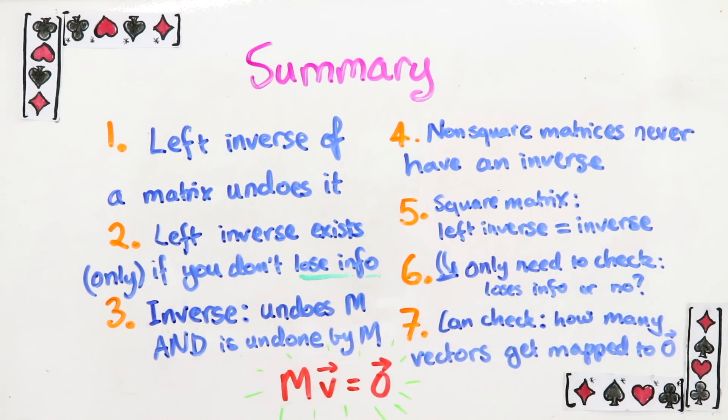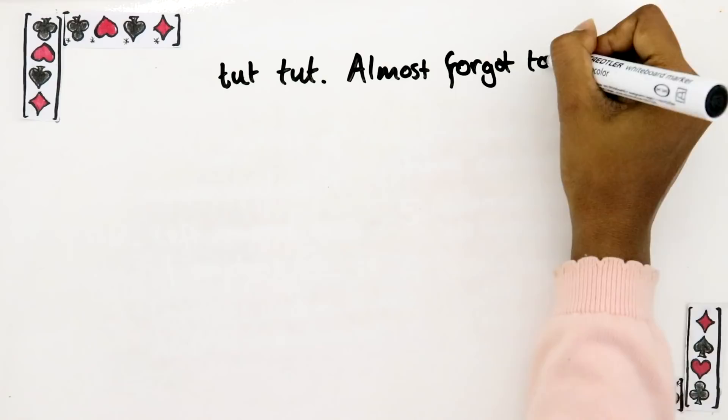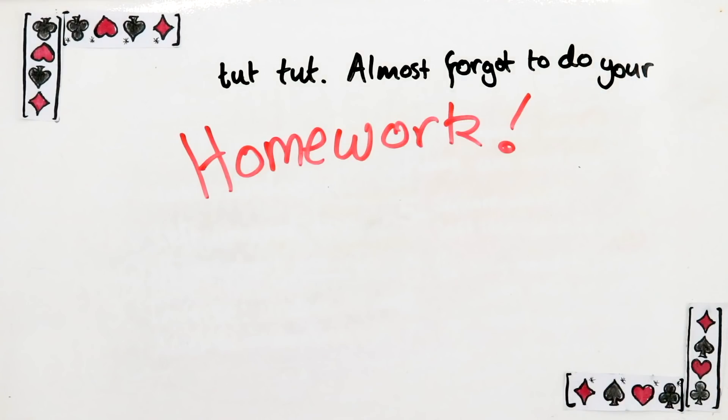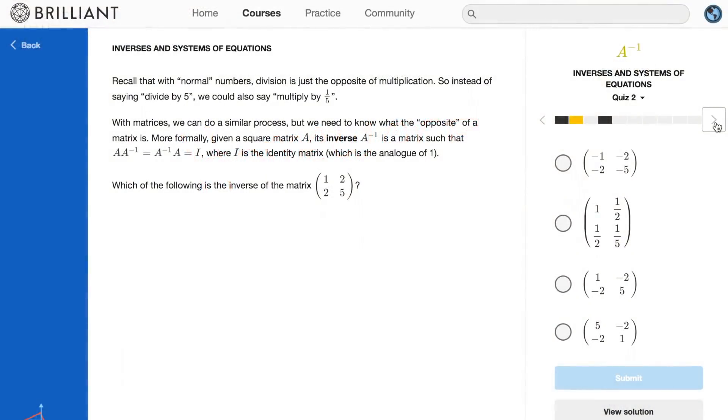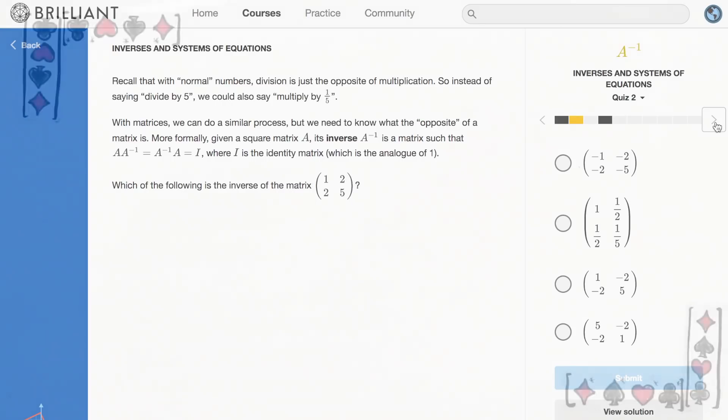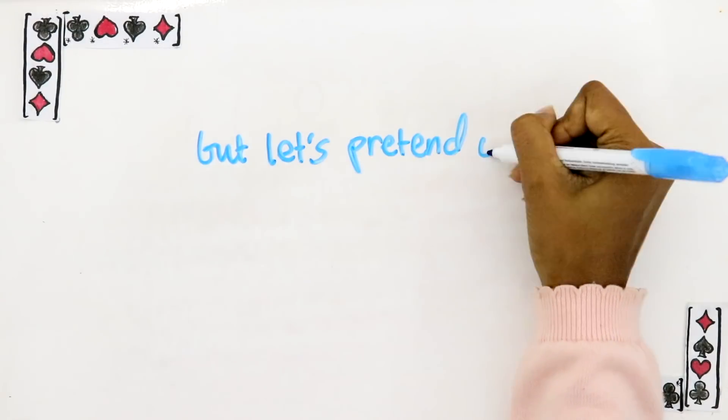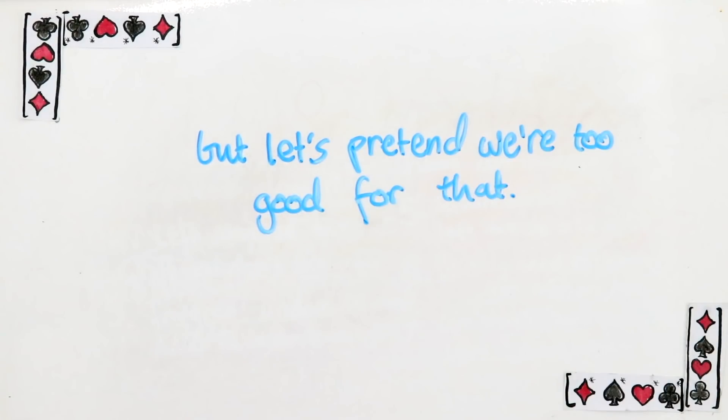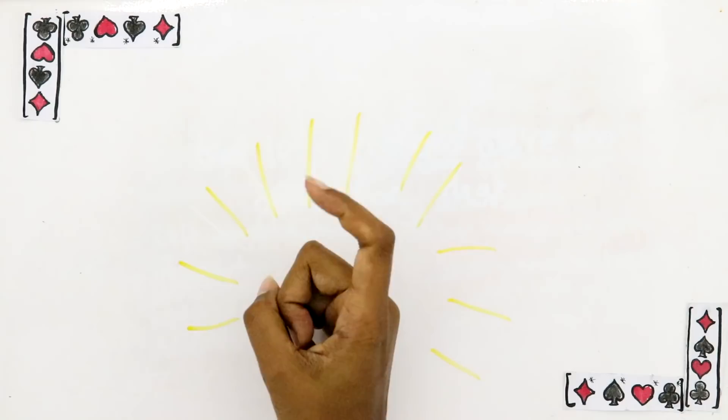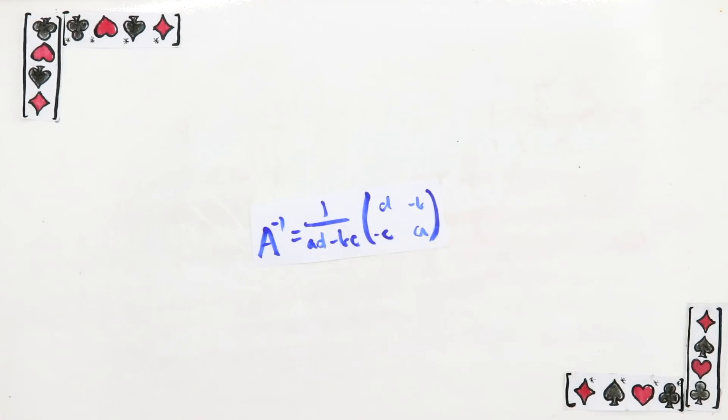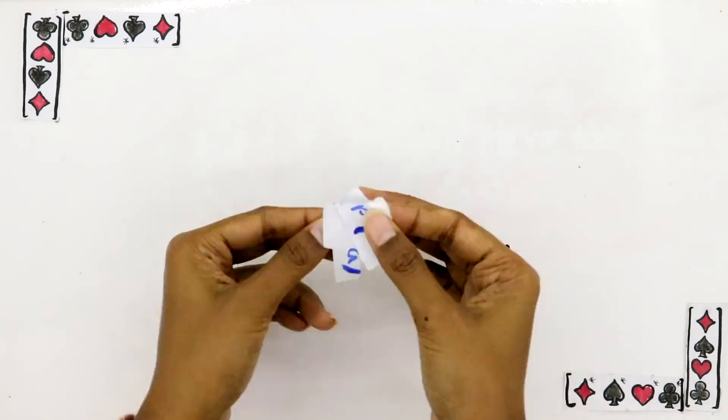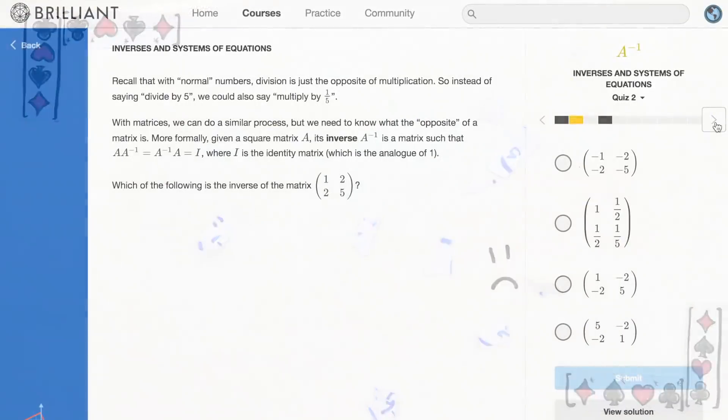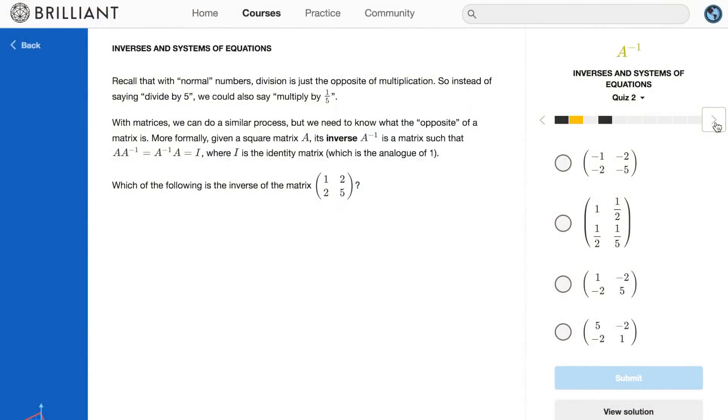But before you run off, here's some homework for you. The first one is multiple choice. Which of these is the inverse of this matrix? I know that you can just check each of these to see which one works, but I'd rather you did it another way. And for crying out loud, don't use the formula for the inverse. Once you've figured it out, put your answer in the poll.